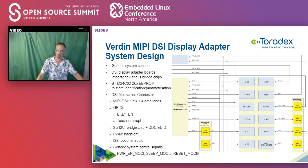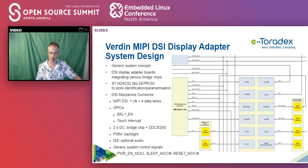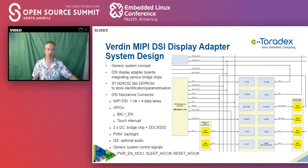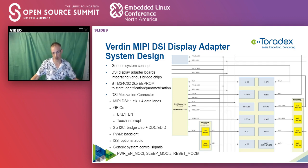Now I want to show you our display adapter system design. This basically shows part of a system-on-module design. You see the DSI mezzanine connector — that's the connector that goes to a display adapter. It's a generic system concept: those DSI display adapter boards can integrate various bridge chips. They also have an EEPROM to store identification or parametrization data. On the board-to-board mezzanine connector, we have MIPI DSI with one clock lane and up to four data lanes.